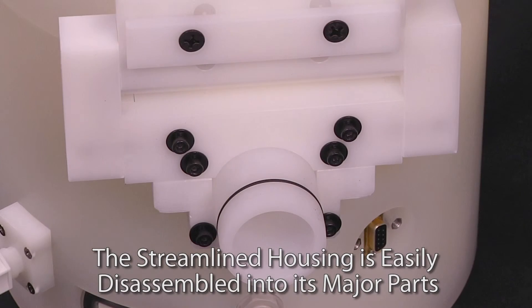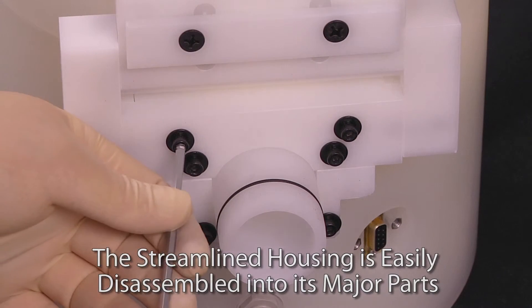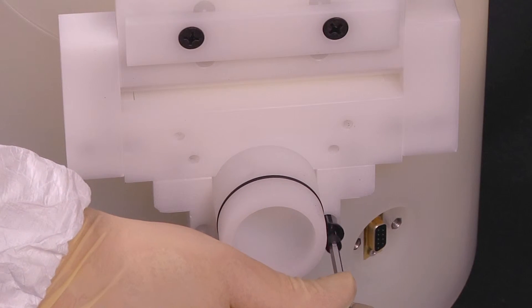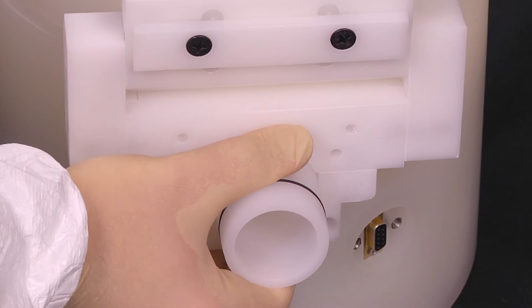With a streamlined housing that can be broken down into smaller sections, fitting a Laurel GBS series spin processor into your glove box couldn't be easier.